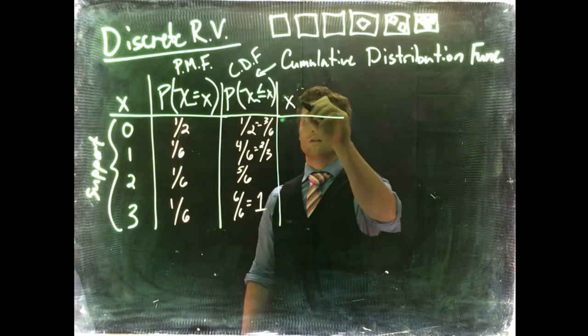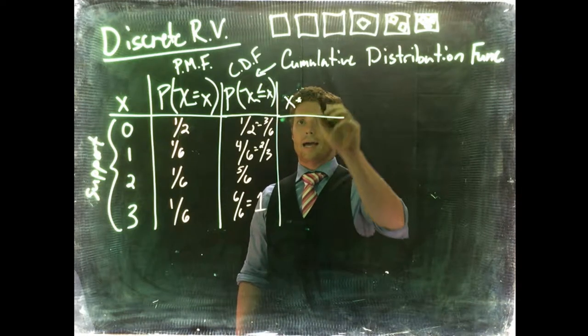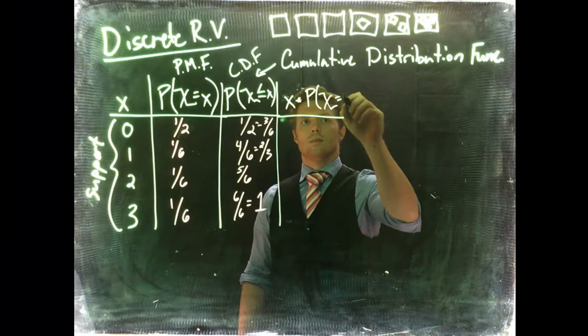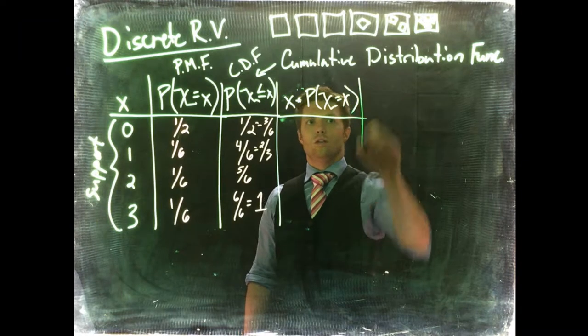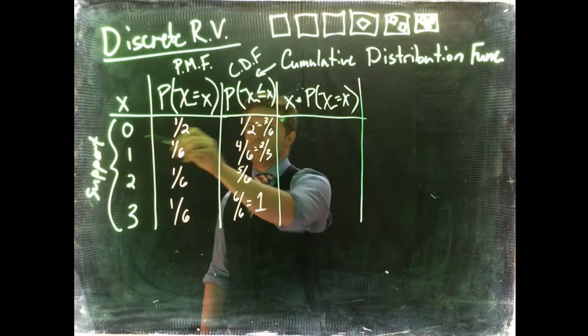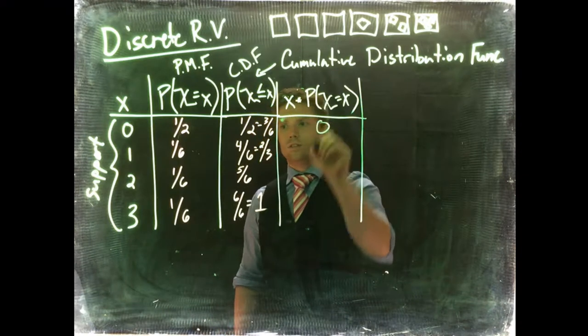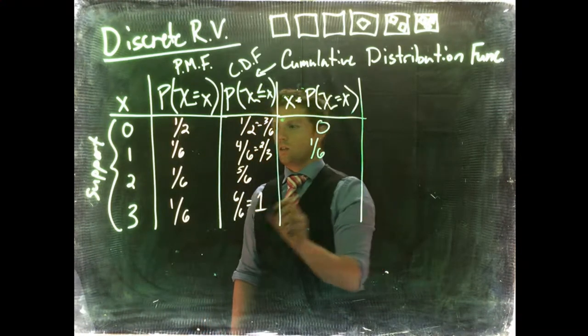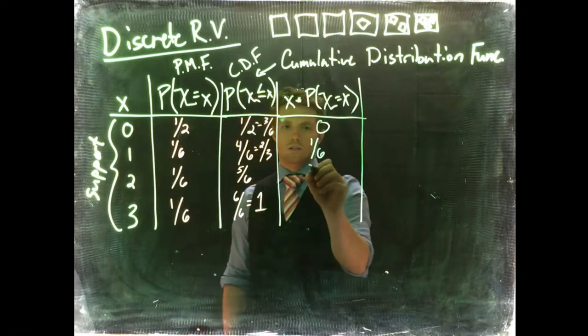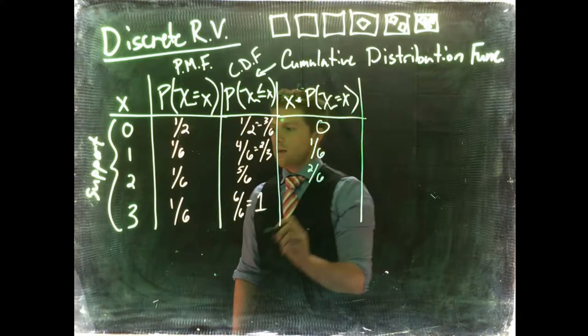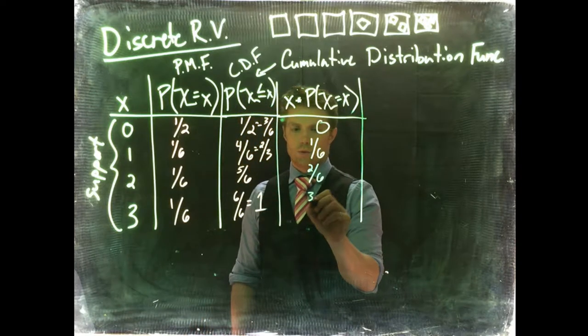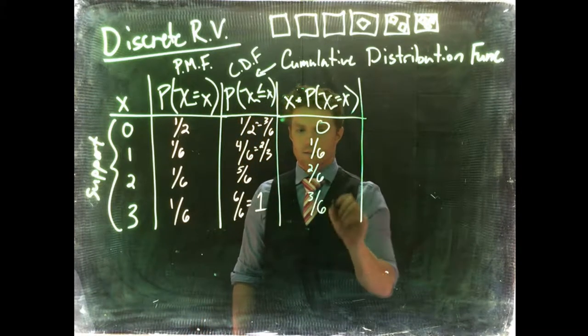So if we write this down, this is going to be the member of the support multiplied by its associated probability. And we go down and do this for every row, so 0 times 1/2 is 0, we've got 1 times 1/6 is still 1/6, we've got 2 times 1/6 is 2/6, and we've got 3 times 1/6 is equal to 3 divided by 6.